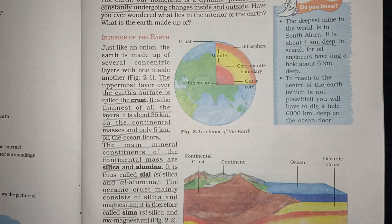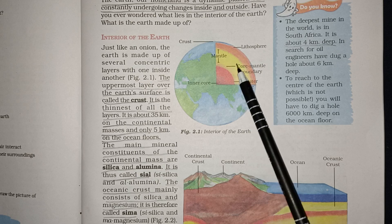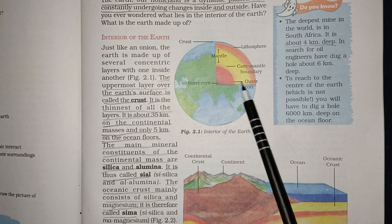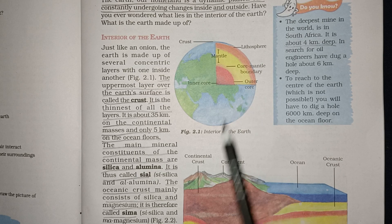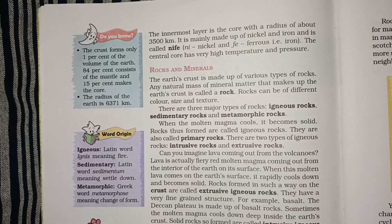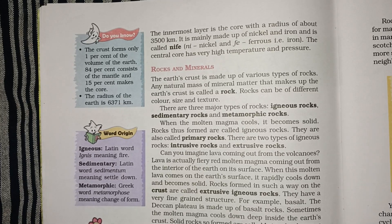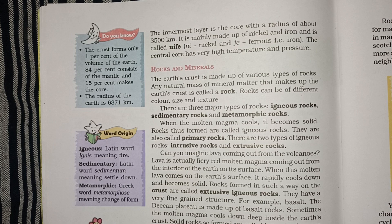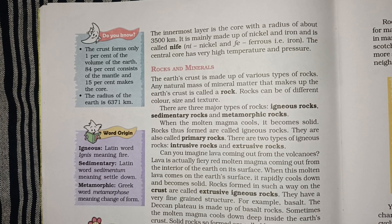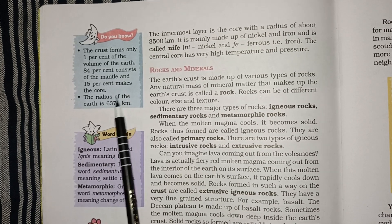Just beneath the crust is the mantle, which extends up to a depth of 2900 km. It is just below the crust. The crust forms only 1% of the volume of the Earth, 84% consists of the mantle, and 15% makes up the core.